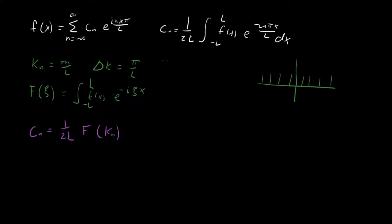What's next? Well, those are our coefficients, let's rewrite the whole series in terms of this now. So our whole series is going to be f of x equal to our sum, n equal minus infinity to infinity, our coefficients, which are f of kn over 2l multiplied by e to the i kn x.